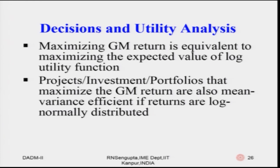Projects, investment, and portfolio decisions that maximize the geometric mean returns are also mean-variance efficient if the log returns are log-normally distributed. So if you are considering the mean-variance efficient concept and distributions are log-normally distributed, then decisions using the geometric mean also correspond to the mean-variance efficient frontier. Rank them accordingly, provided returns are log-normally distributed.